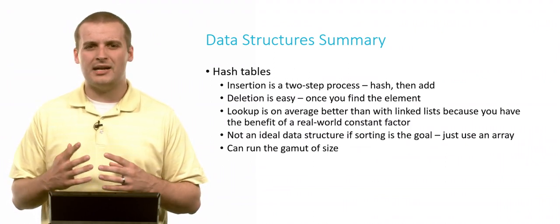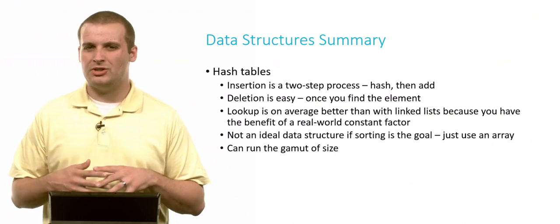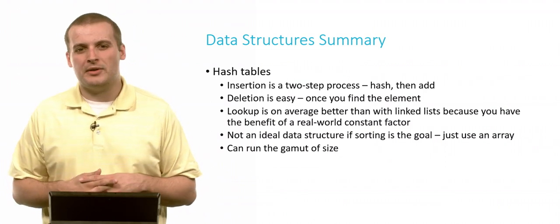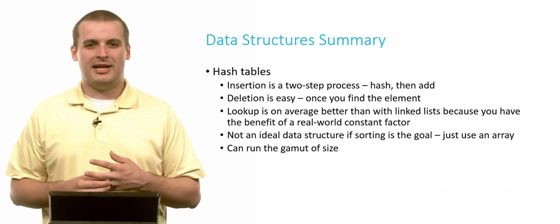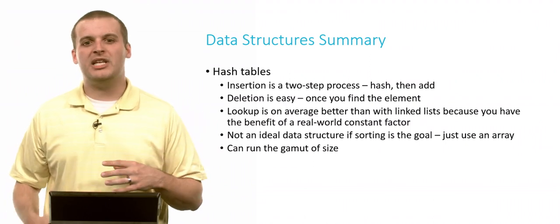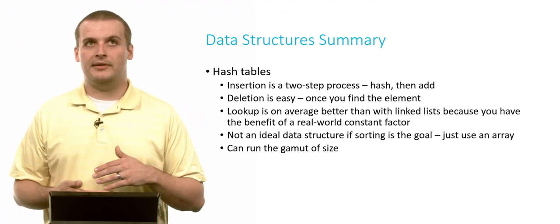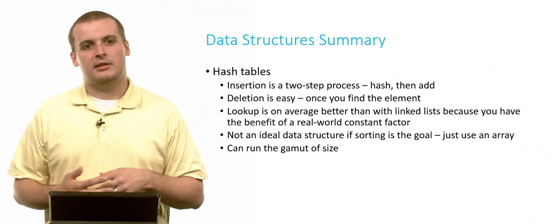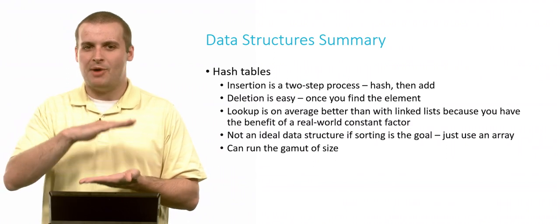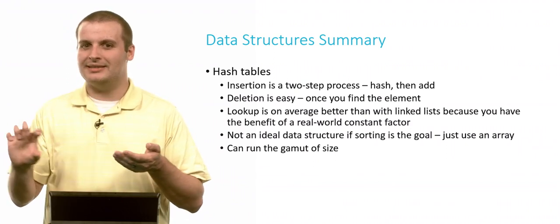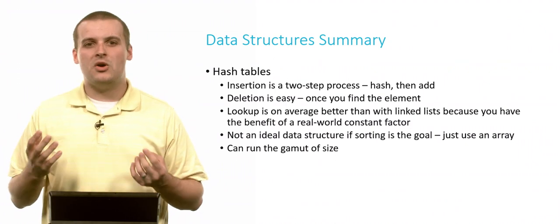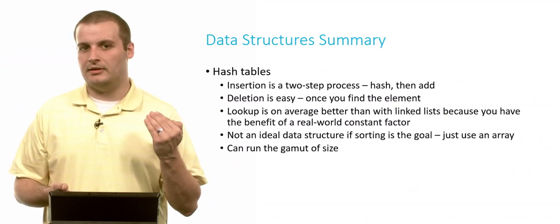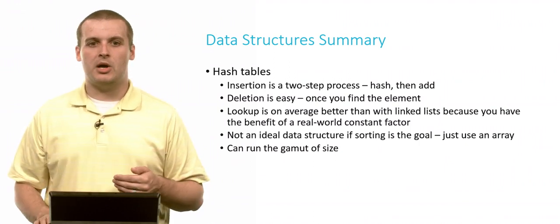Again, if sorting is kind of your goal here, hash table is probably not the right way to go. Just use an array if sorting is really important to you. And they can sort of run the gamut of size. It's hard to say whether a hash table is small or big, because it really depends on how large your hash table is. If you're only going to be storing five elements in your hash table, and you have a hash table with 10,000 elements in it, you're probably wasting a lot of space. Contrast being, you can also have very compact hash tables, but the smaller your hash table gets, the longer each of those linked lists gets. And so there's really no way to define exactly the size of a hash table, but it's probably safe to say it's generally going to be bigger than a linked list, of storing the same data, but smaller than a trie.